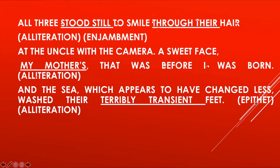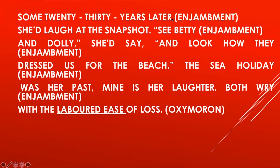'And the sea which appears to have changed less washed their terribly transient feet' — 'terribly transient' has the 't' sound repeated, so this is alliteration. This is also epithet — when an adjective is used in a poem to describe a noun. Here, 'feet' (noun) has been described as 'transient' (temporary, not permanent), so this is epithet. 'Some 20-30 years later' — this is enjambment because there is no punctuation mark and the sentence continues to the next line: 'she would laugh at the snapshot.'